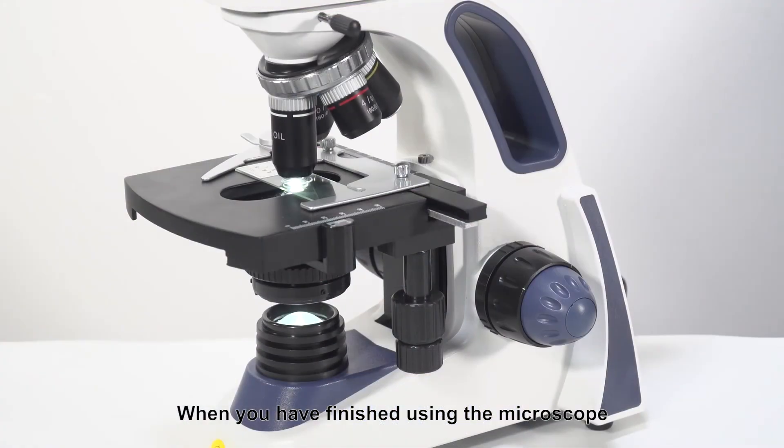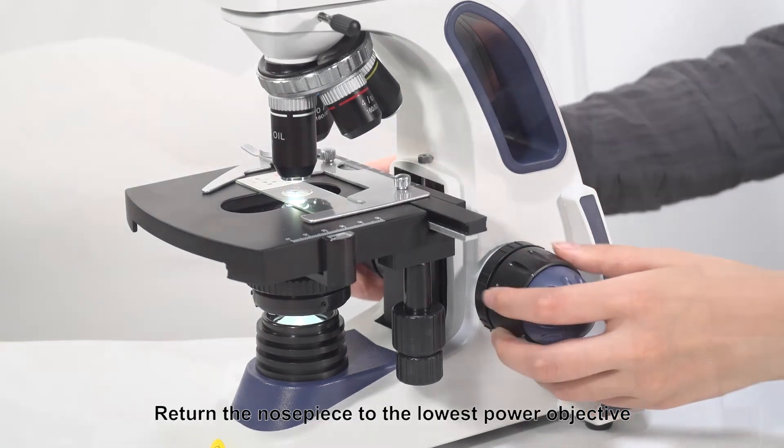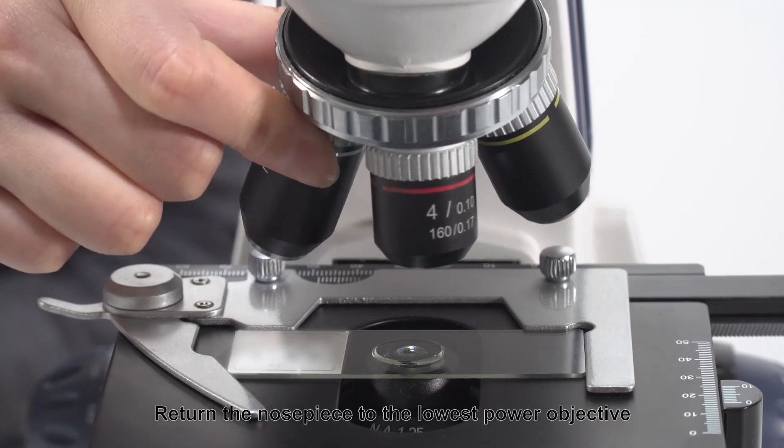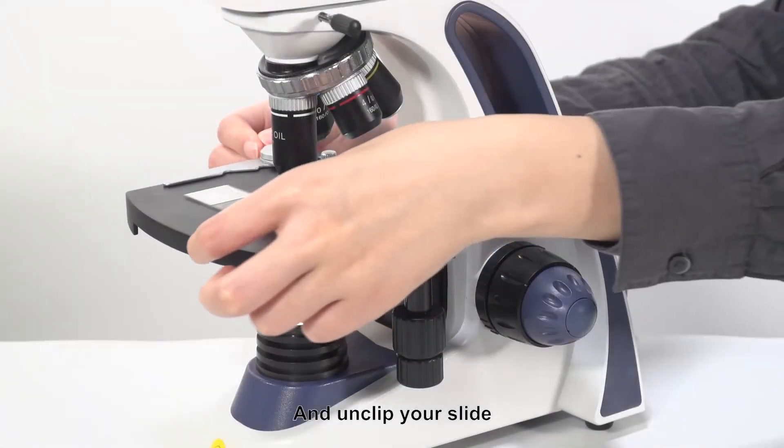When you have finished using the microscope, move the stage away from the objectives. Return the nose piece to the lowest power objective and unclip your slide.